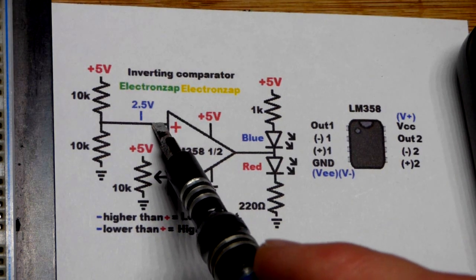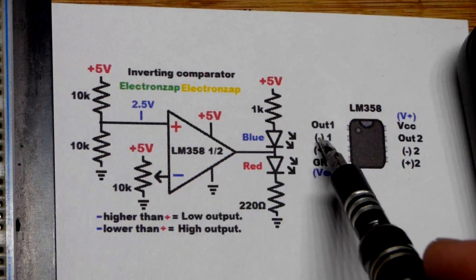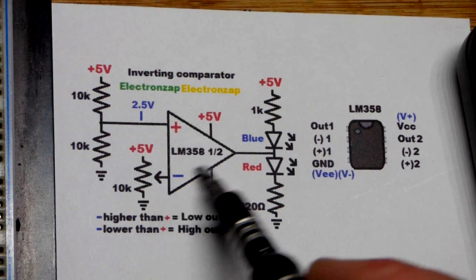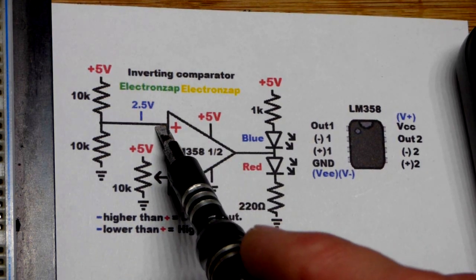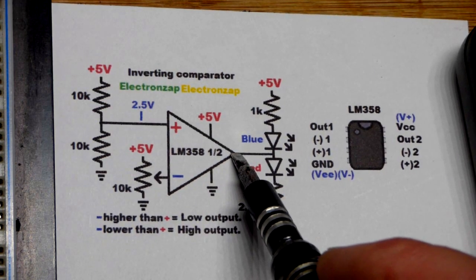So now that we've got our reference voltage, our signal is going to the inverting input or the minus right there. And so the output always wants to be more like what the plus is than what the minus is. That's the main takeaway.